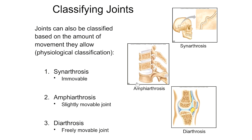The next type of joint classified by function is an amphiarthrosis — a slightly movable joint. Most cartilaginous joints are slightly movable and fall into this category. What we're seeing here is a section of the vertebral column. Each vertebra has a small white pad of cartilage between them — a cartilaginous joint that allows just a little bit of movement between adjacent vertebrae, making each one an amphiarthrotic joint.